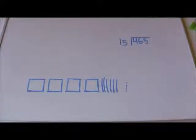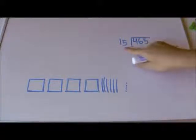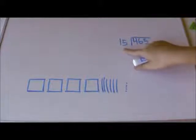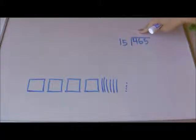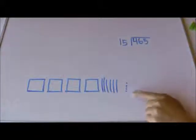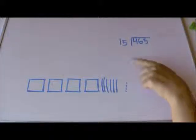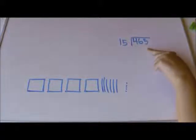Here's the next long division video. With this one, we still have divisors that are in the teen range, but our quotient is going to be bigger numbers. So 465 — that's 400, 6 tens, and 5 ones — and we want to divide that by 15. How many 15s are in 465?